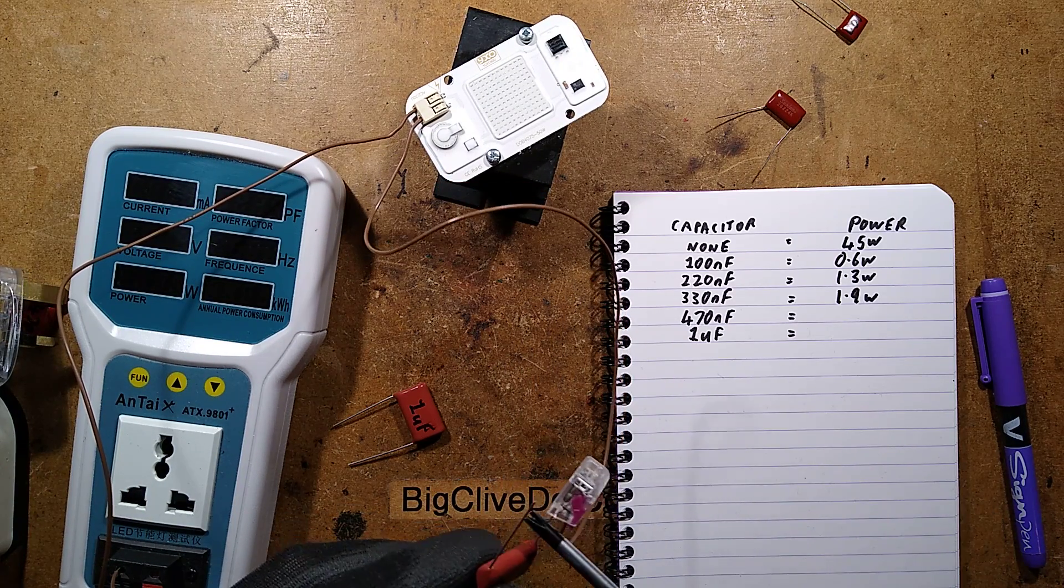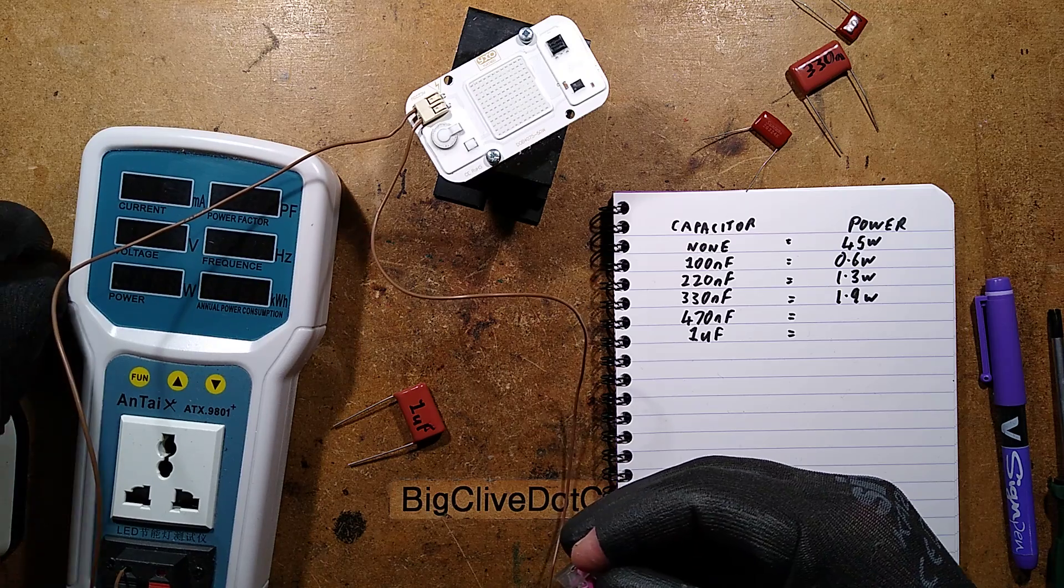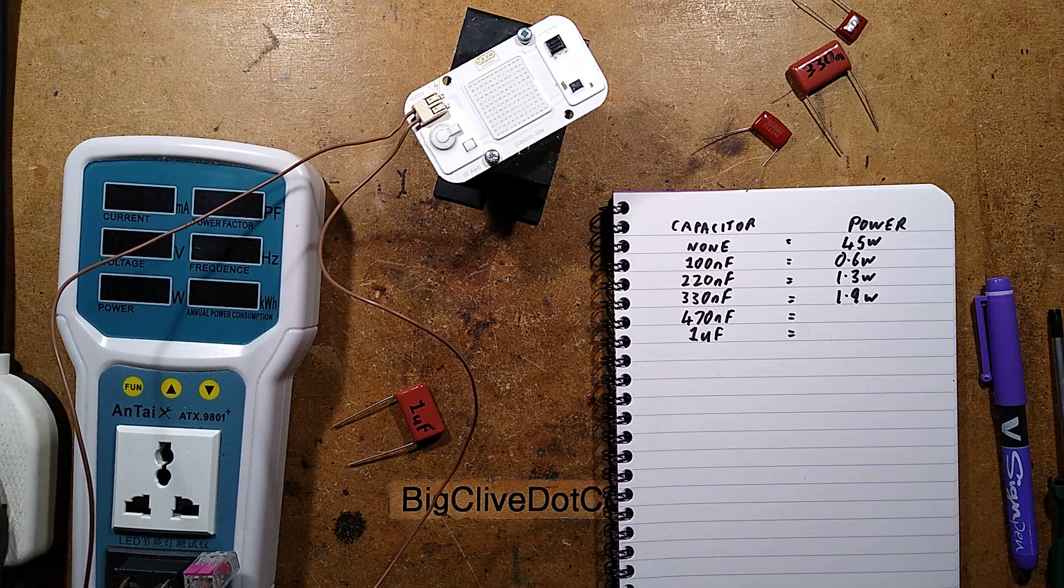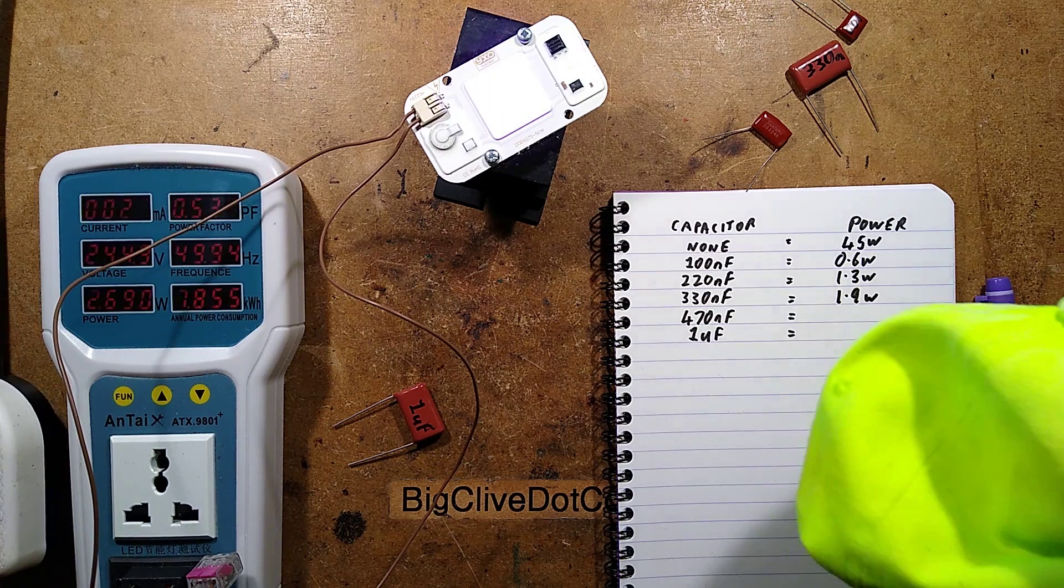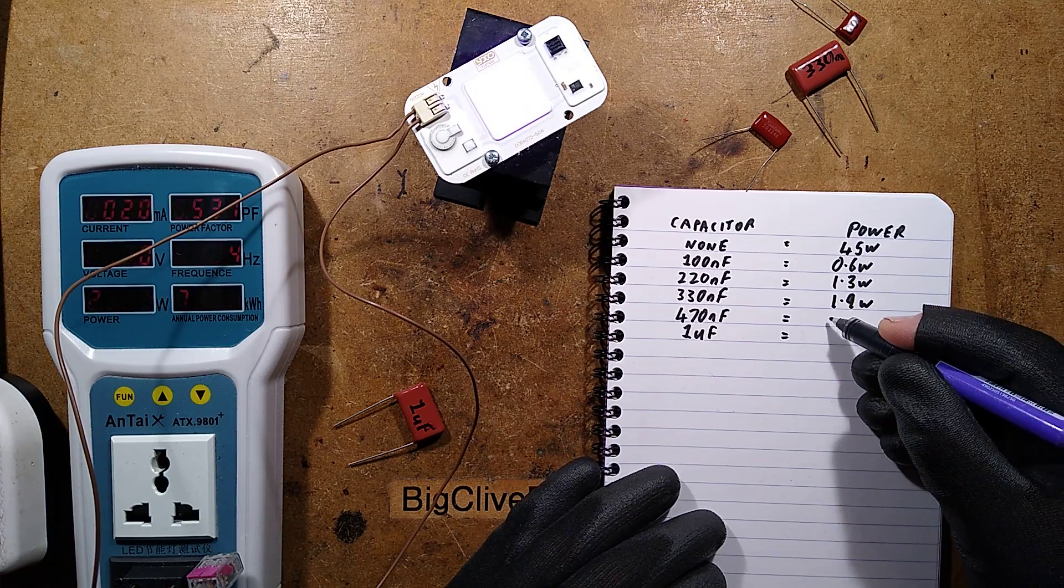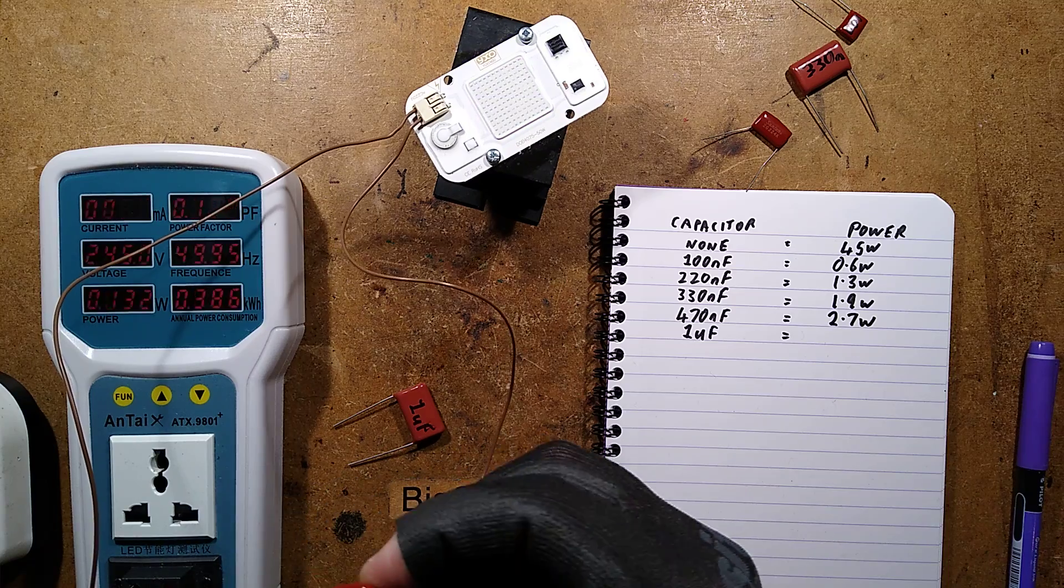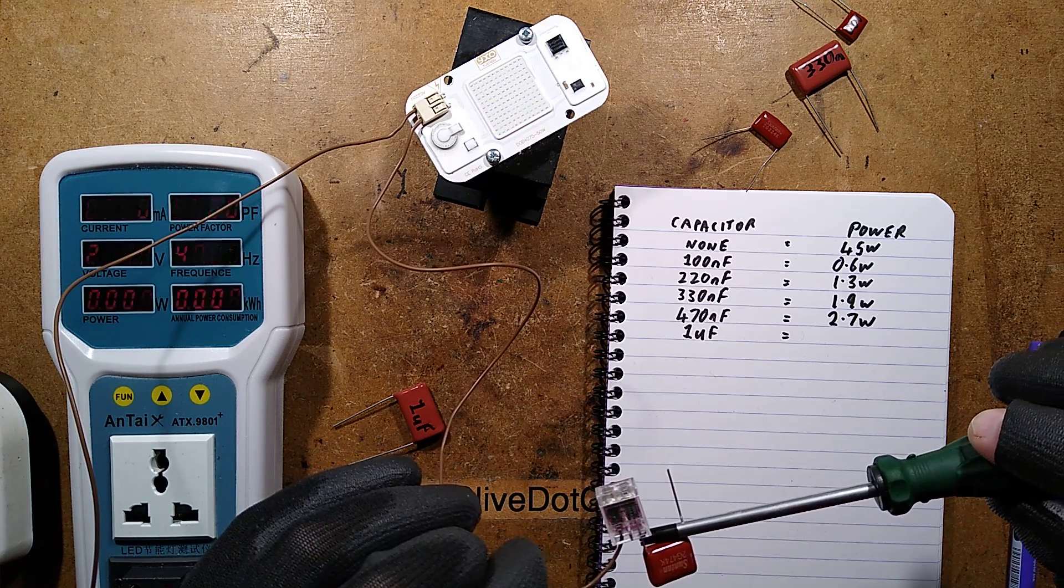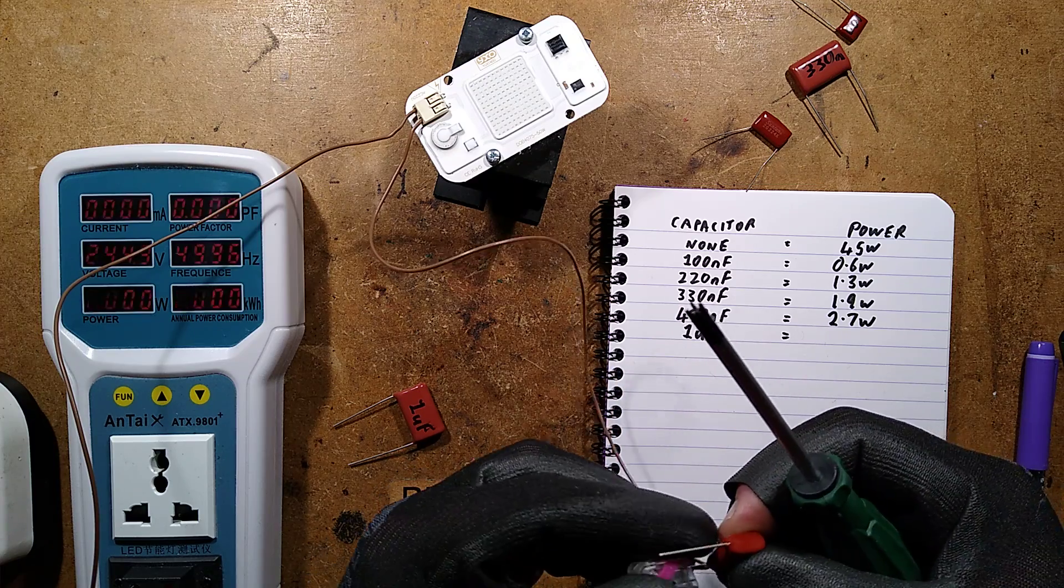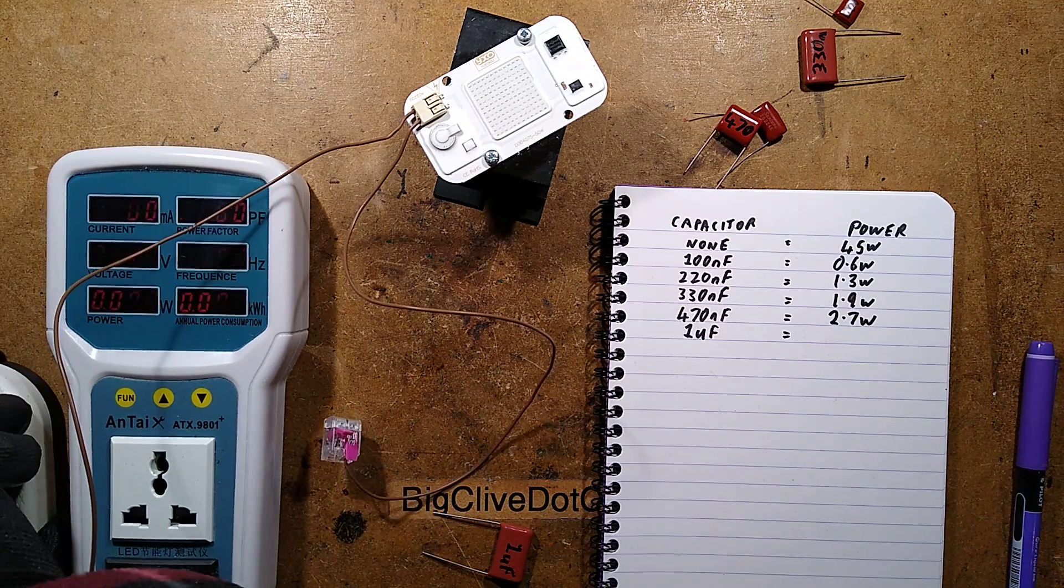Unplug, discharge capacitor. We're on to 470 nanofarad now, which is an unusually small capacitor - they vary in size quite a lot depending on manufacture and construction. 470 nanofarad - brighter again, looking pretty good, making the hat pop. It's 2.7 watts. I'm just going to unplug this to show you that it does hold a charge if you don't discharge it. It just made a mockery of me by not making a little crack noise. I just unplugged it at the zero crossing point then.